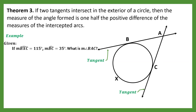Let's have an example. Given: if the measurement of arc BAC is equal to 115 degrees and the measurement of arc BC is equal to 35 degrees, what is the measurement of angle BAC? Here in the figure, arc BAC has a measurement of 115 degrees and arc BC has a measurement of 35 degrees. Using the theorem, the measurement of the angle formed is one half the positive difference of the intercepted arcs.